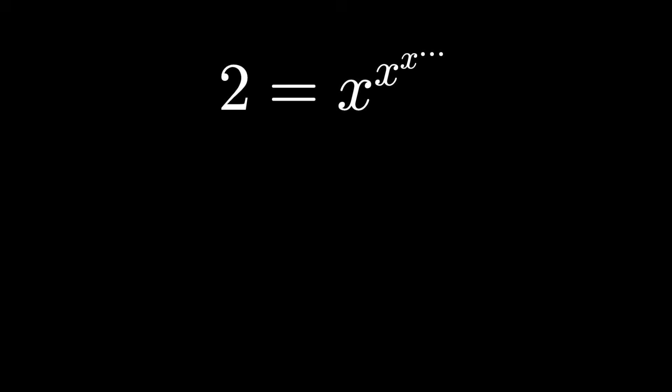Solve for x. A nice trick is to realize that the exponent tower of x, x to the x to the x to the x, is what we're calling 2. This infinite iteration means we can just place 2 anywhere we see x to the x to the x on forever.